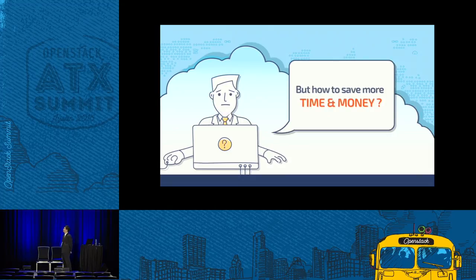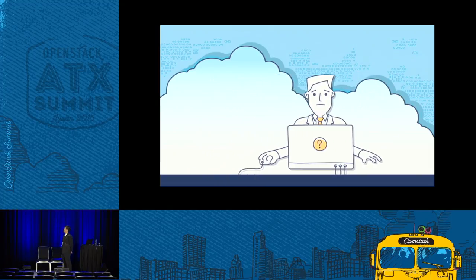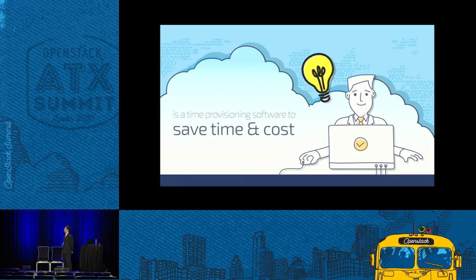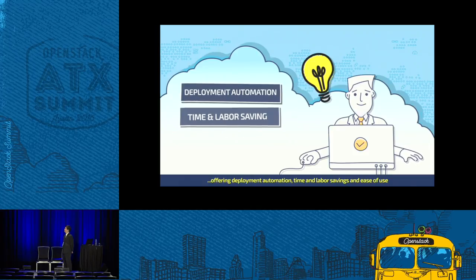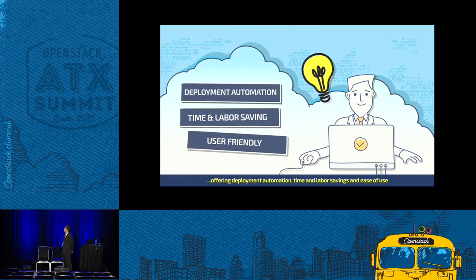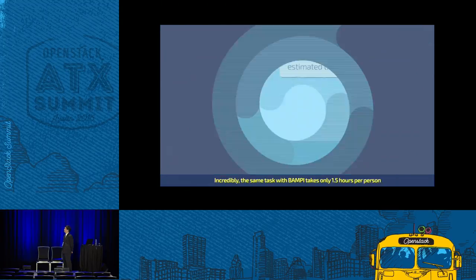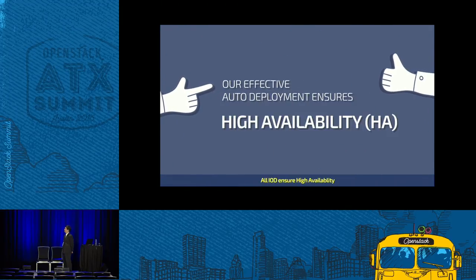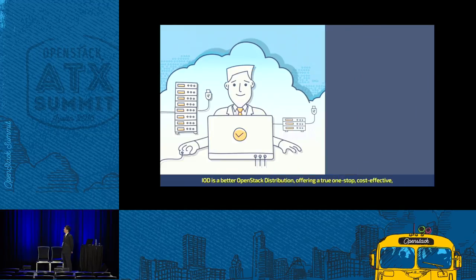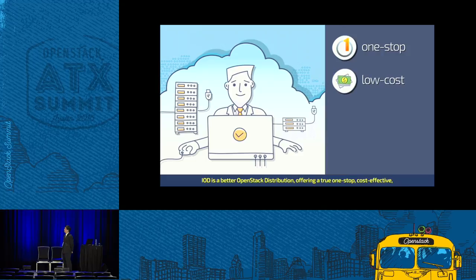How to save even more time and money? BAMPI is a time provisioning software to save time and cost, offering deployment automation, time and labor savings, and ease of use. Without BAMPI, auto-deployment from bare metal takes one person up to a full 288 hours. Incredibly, the same task with BAMPI takes only 1.5 hours per person. All IOD ensures high availability. IOD is a better OpenStack distribution, offering a true one-stop, cost-effective, powerful, and easy-to-use solution.